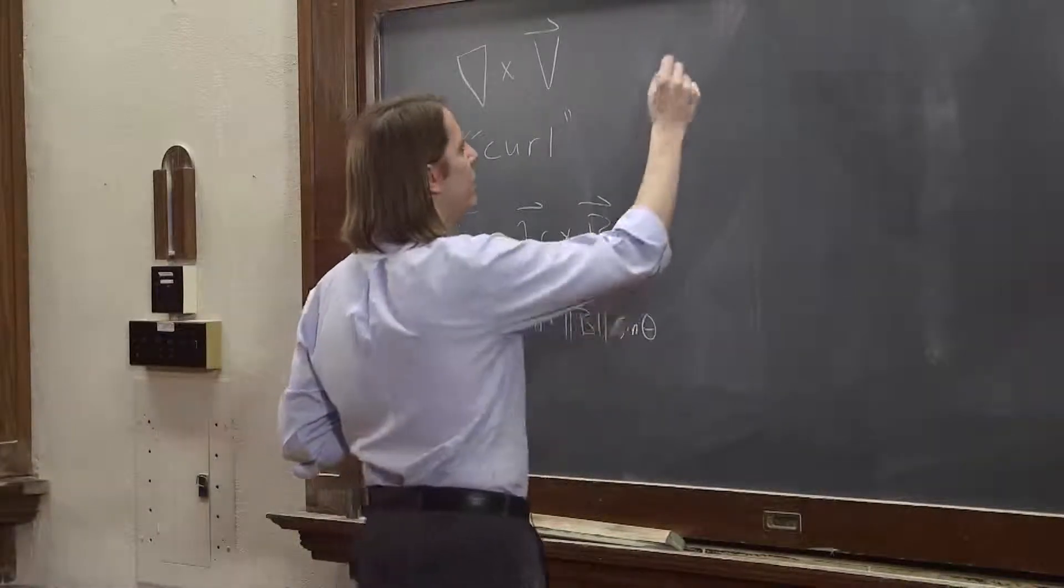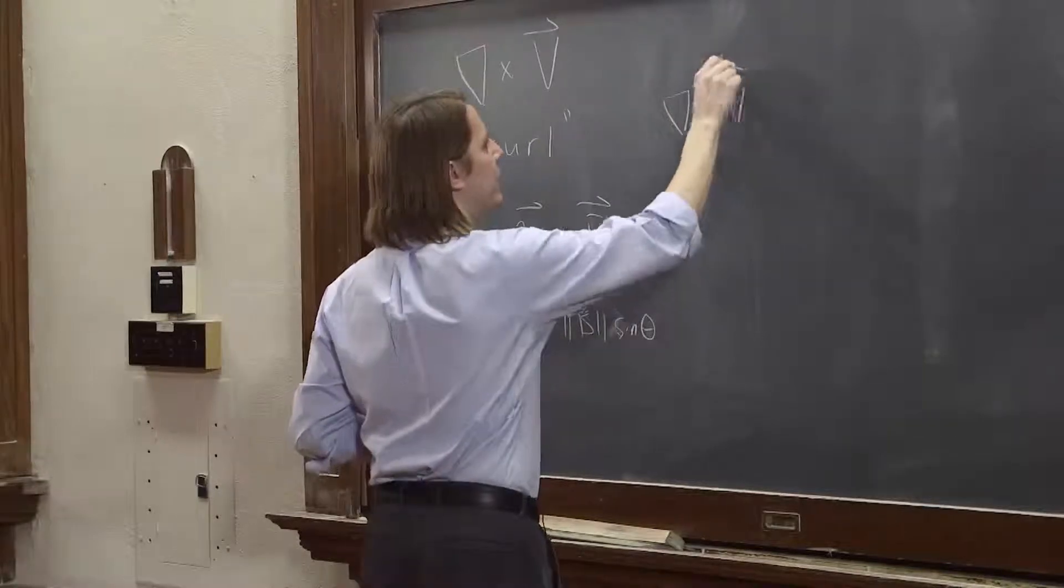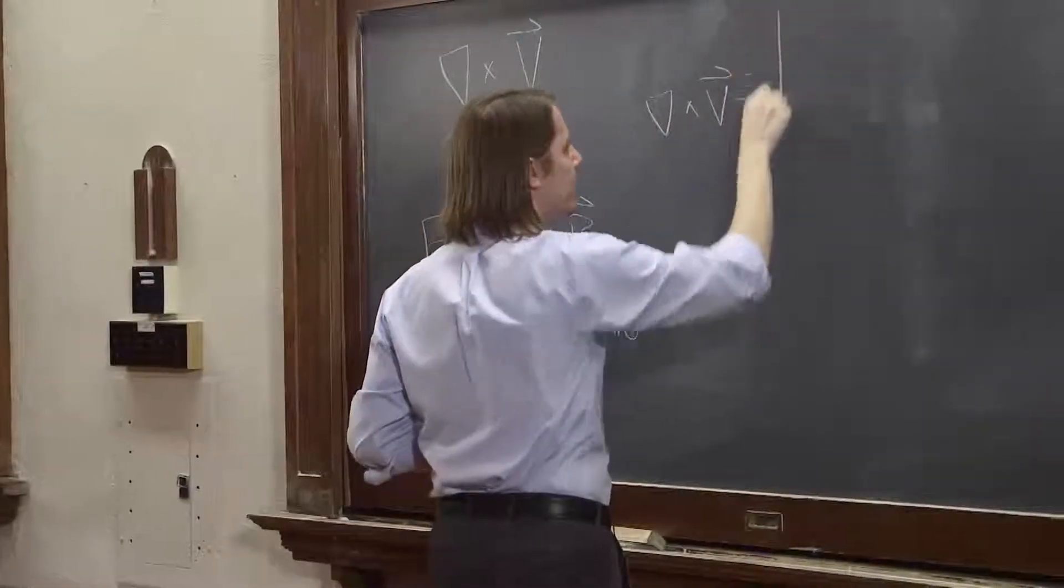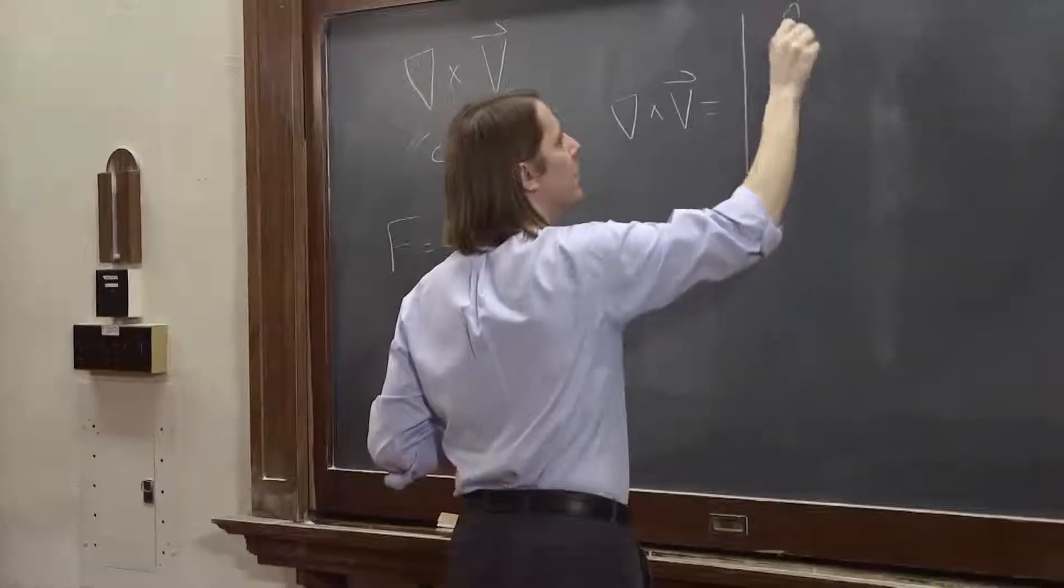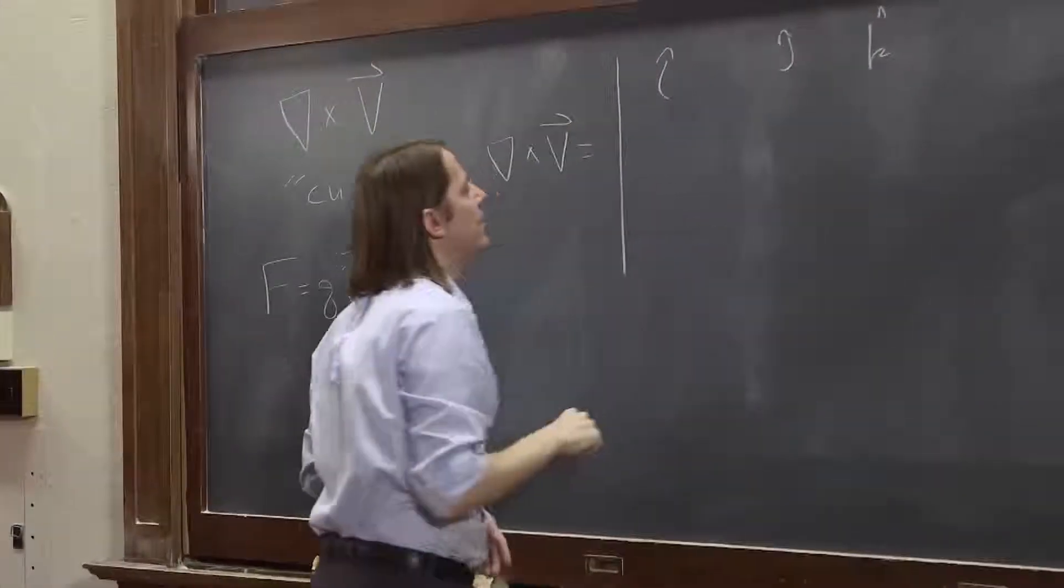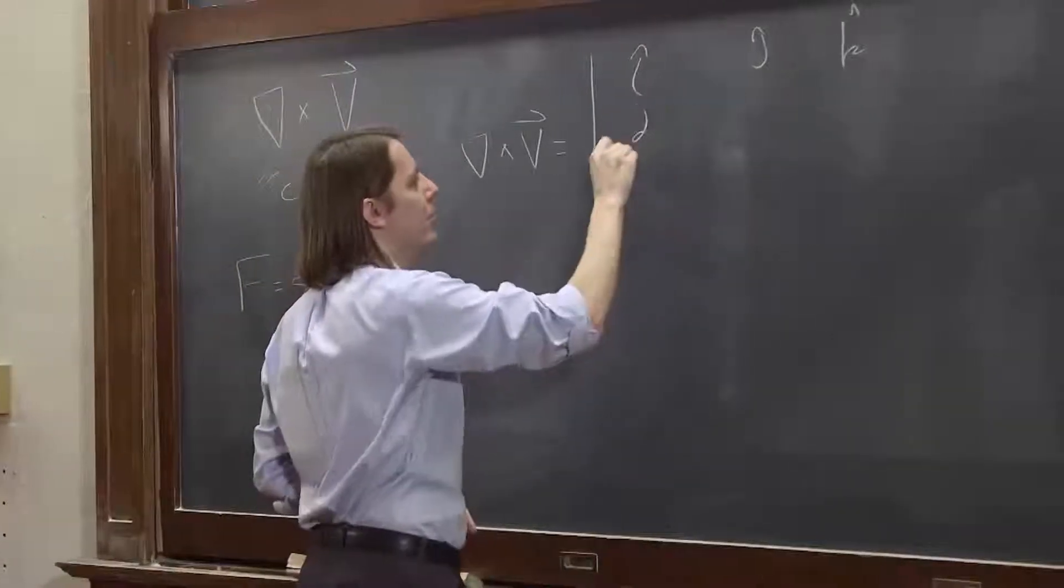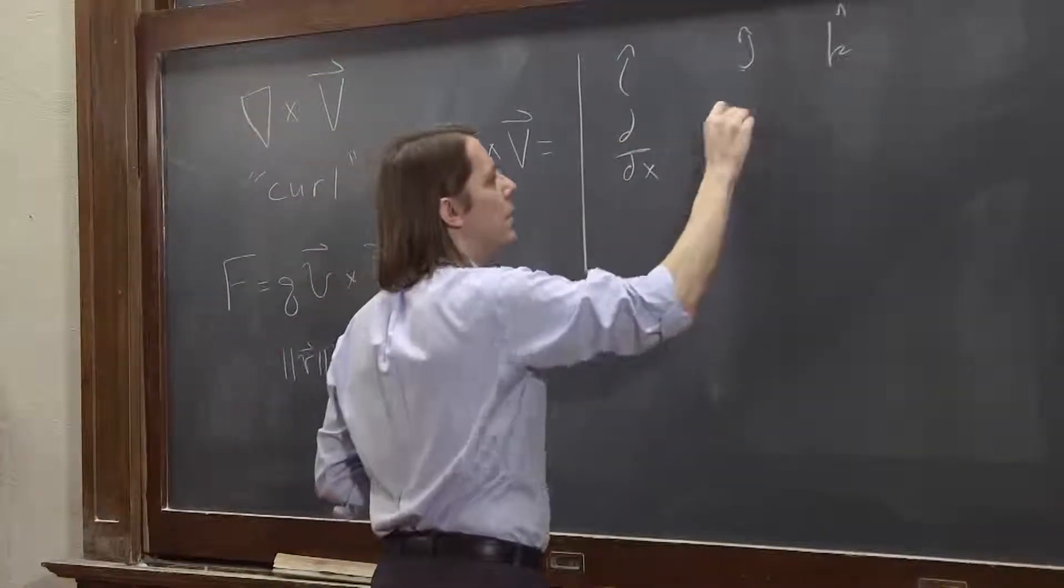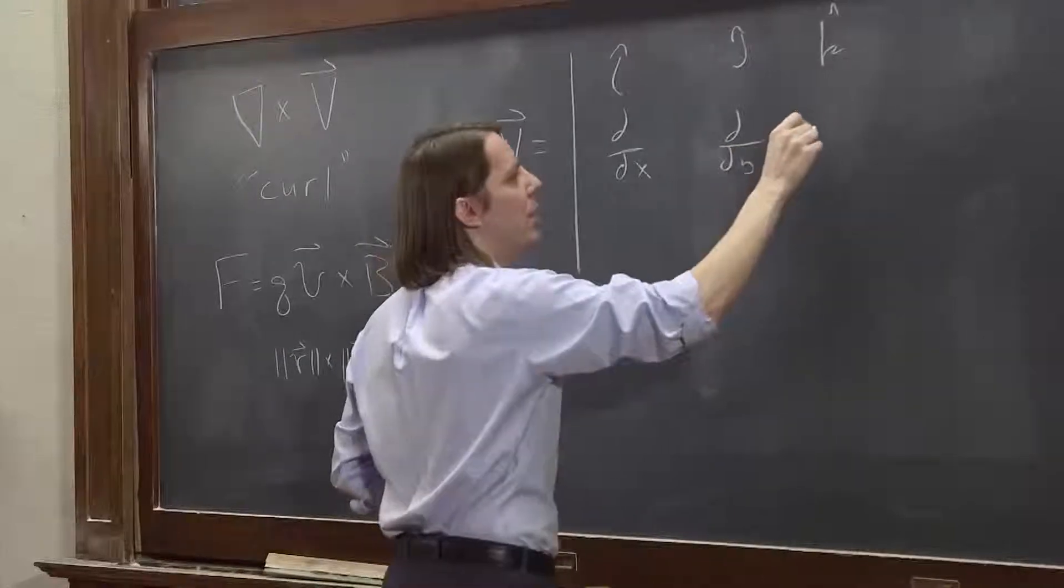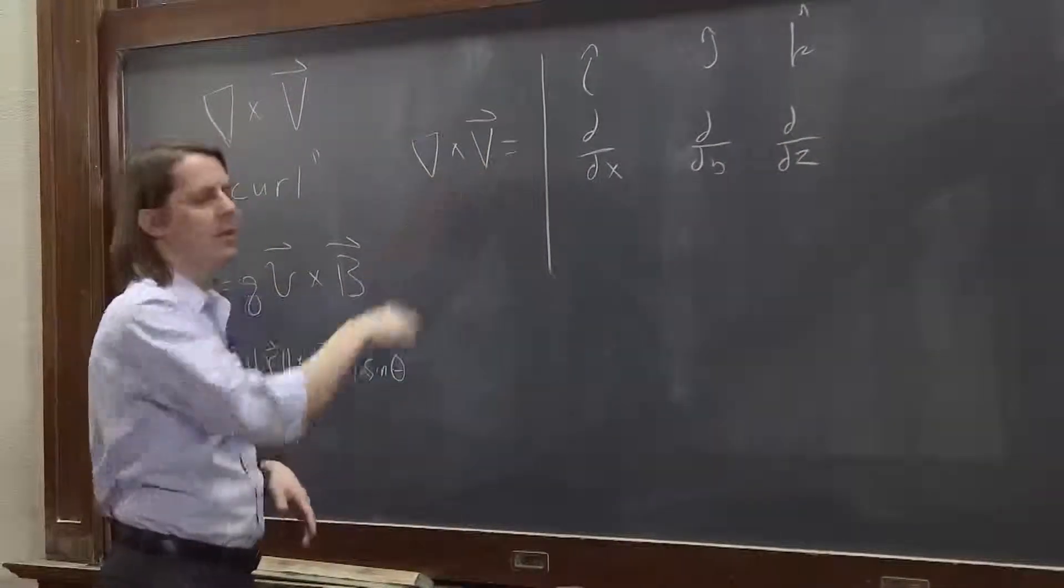So we can also define it like this. If we have del crossed with a vector field v, that's equal to the determinant of a matrix where you put i, j, and k first. And then you put the first thing - in this case not a vector but an operator: d/dx, d/dy, d/dz. And then you put the second one.